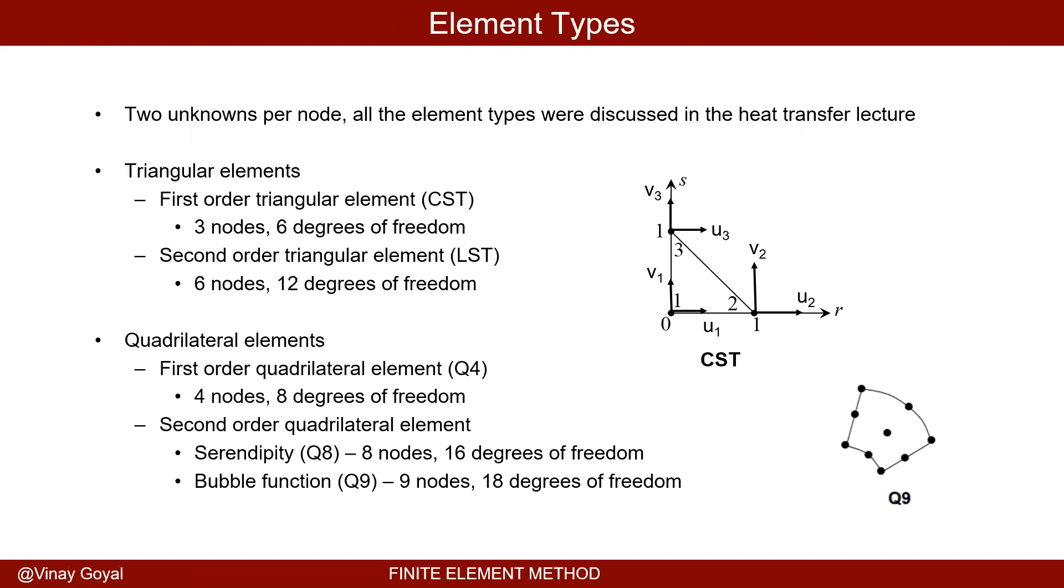So there's a lot of element types. Two unknowns per node because I want to find the deflections of these nodes. All the elements were discussed before but I'll bring that up again. The first order triangular element has a node here, node here, node here. A second order triangular element has a node here, node here, and node here in addition to that. So there's 12 degrees of freedom here. I have six in this particular one. We call this the constant strain triangle because the strains are constant in every element and they're just numbers. The quadrilateral element, there's a first order quadrilateral element, four nodes, eight degrees of freedom. Obviously all I need to calculate now for these are u and v. And then there's serendipity element which has eight nodes, 16 degrees of freedom. And we covered the bubble function in the previous lecture. Q9 shown on the right which is nine nodes, 18 degrees of freedom.